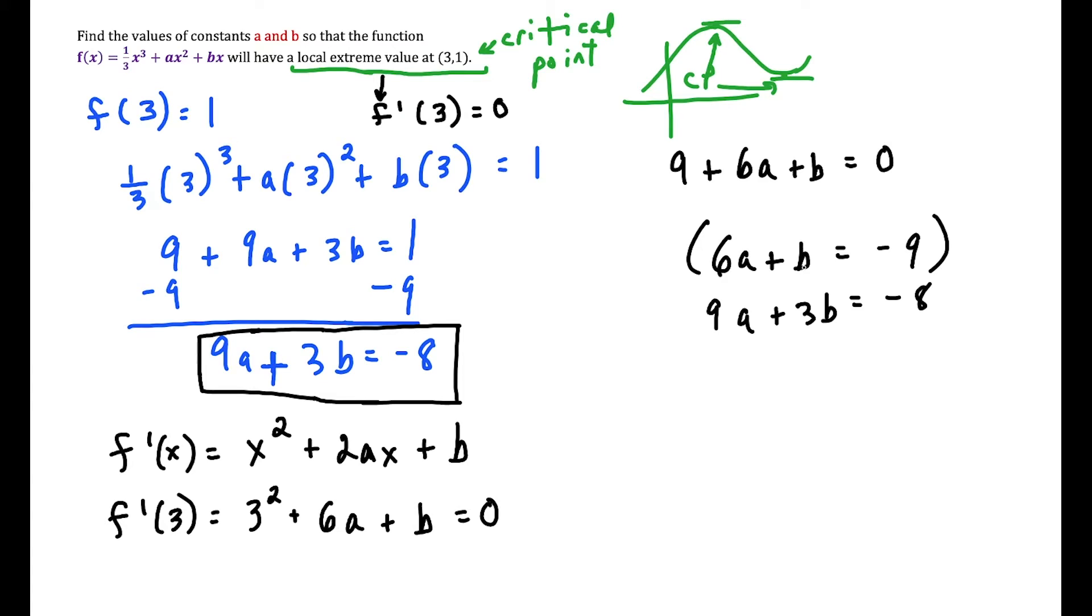What I'm going to do here is get the b terms to be matching opposites. So I'll multiply the top equation by -3, and we'll have -18a - 3b = 27, and we multiply everything by -3. And now we've got 9a + 3b = -8. The second equation we're just leaving it alone, because now with this we could add these two equations together.